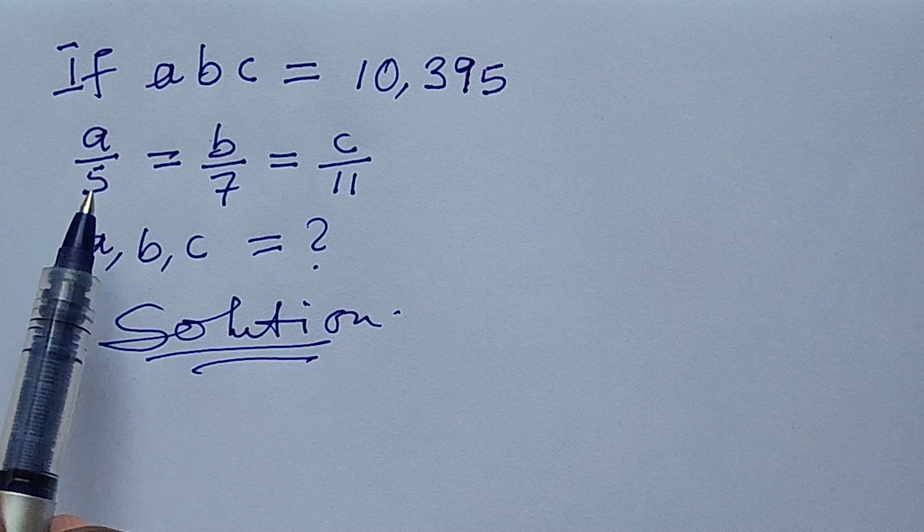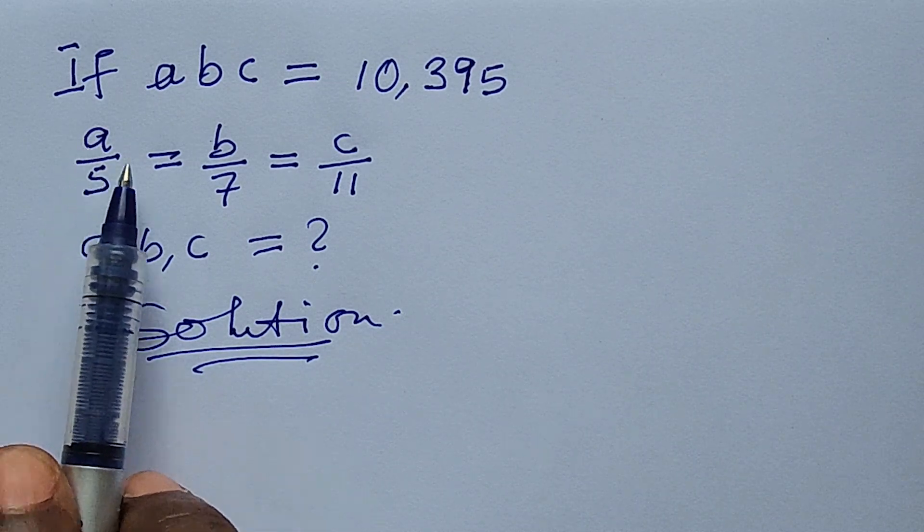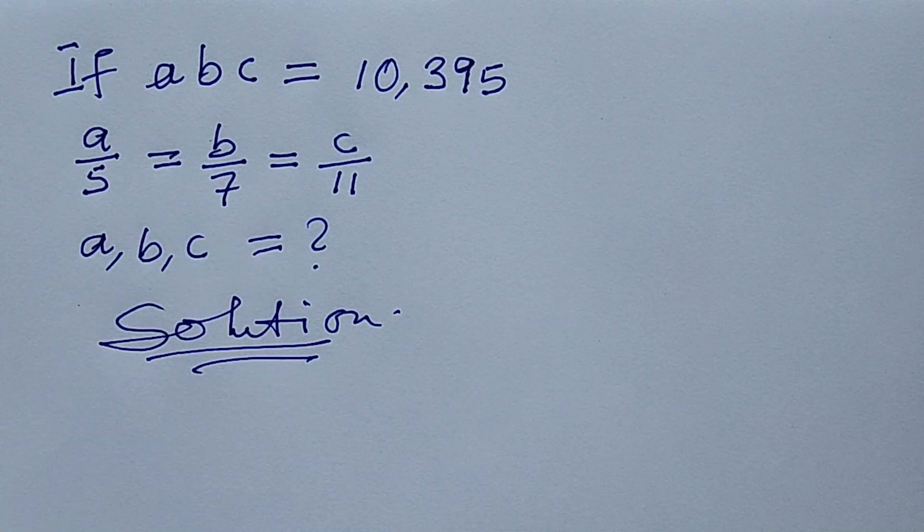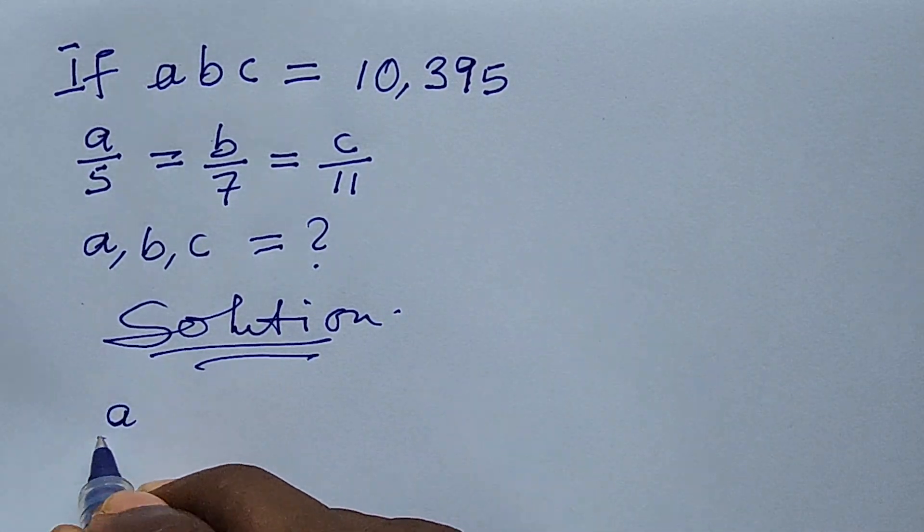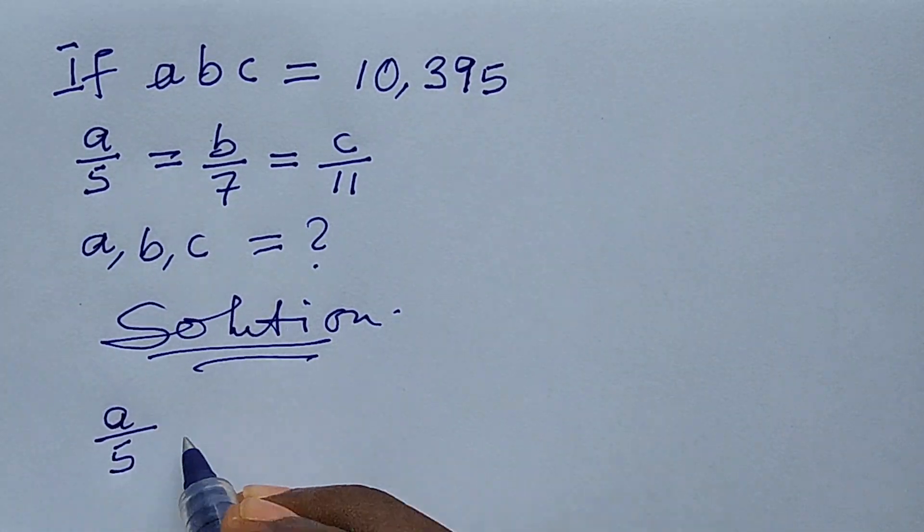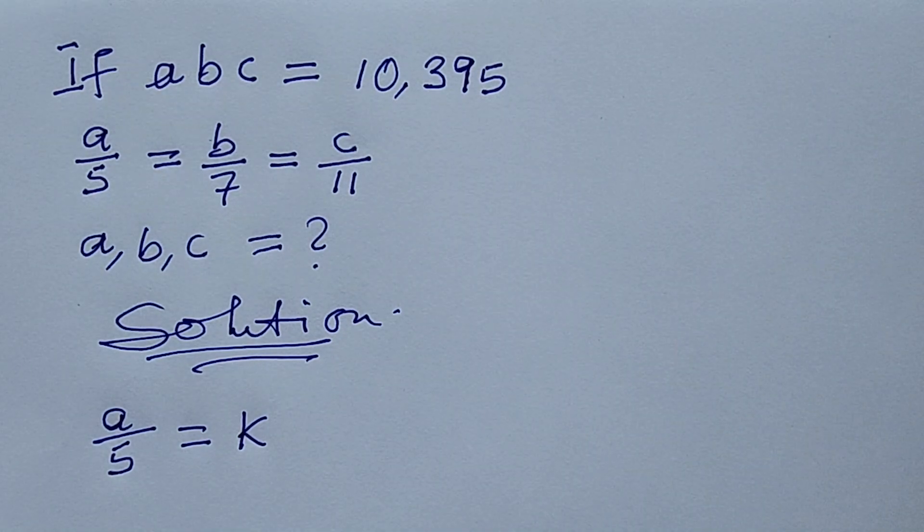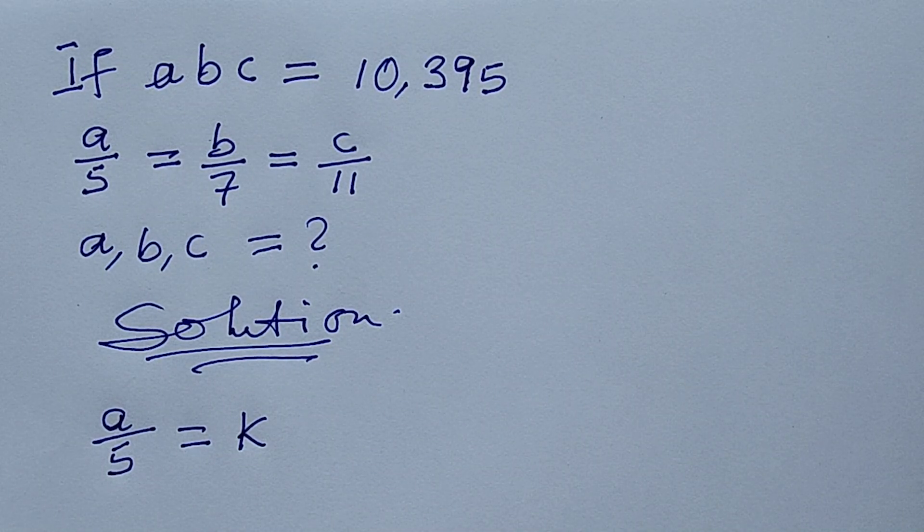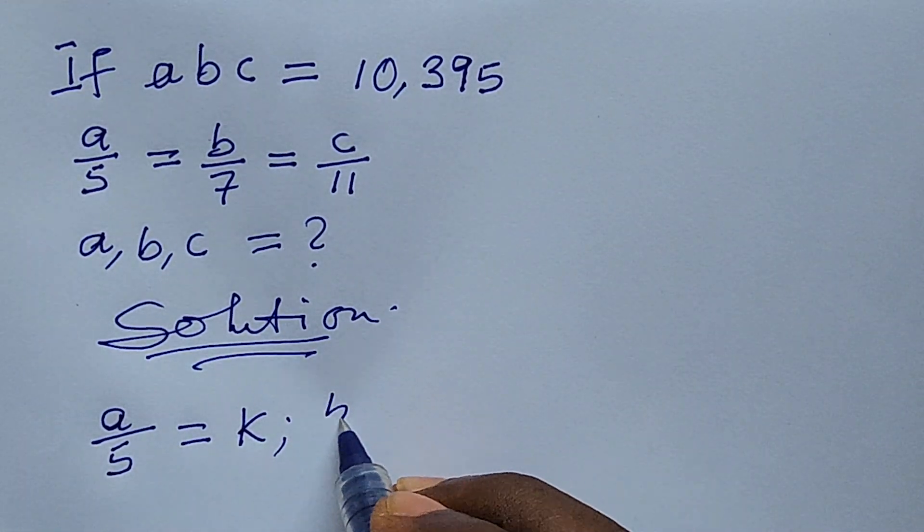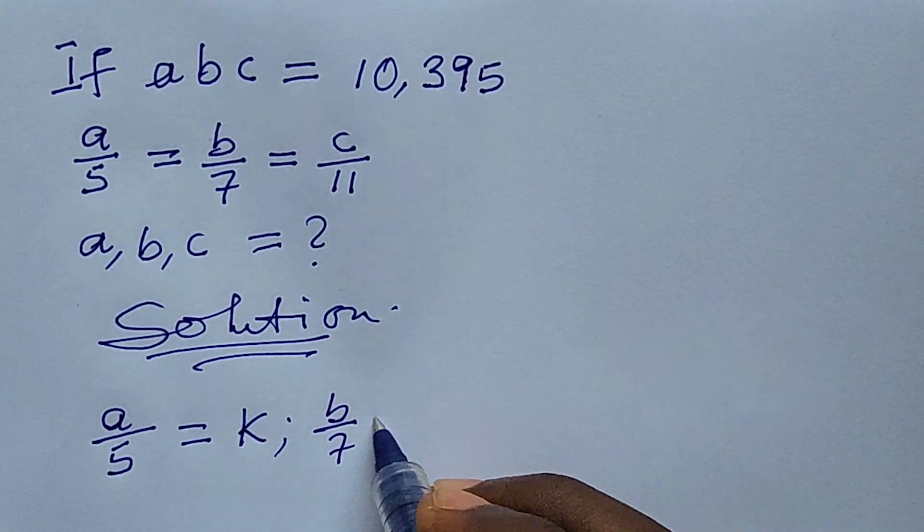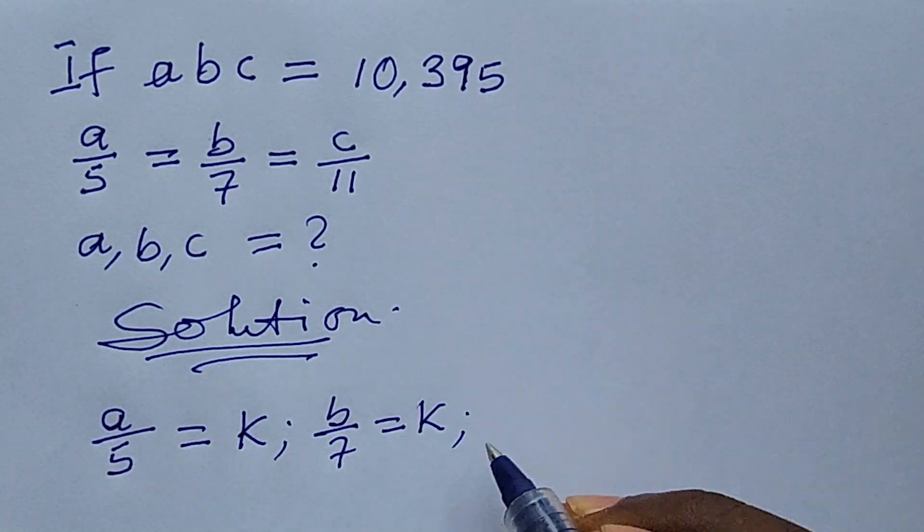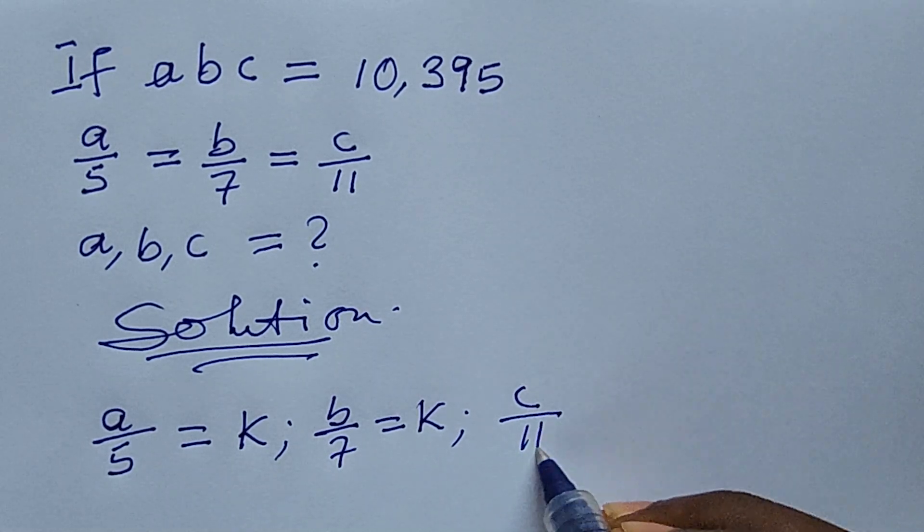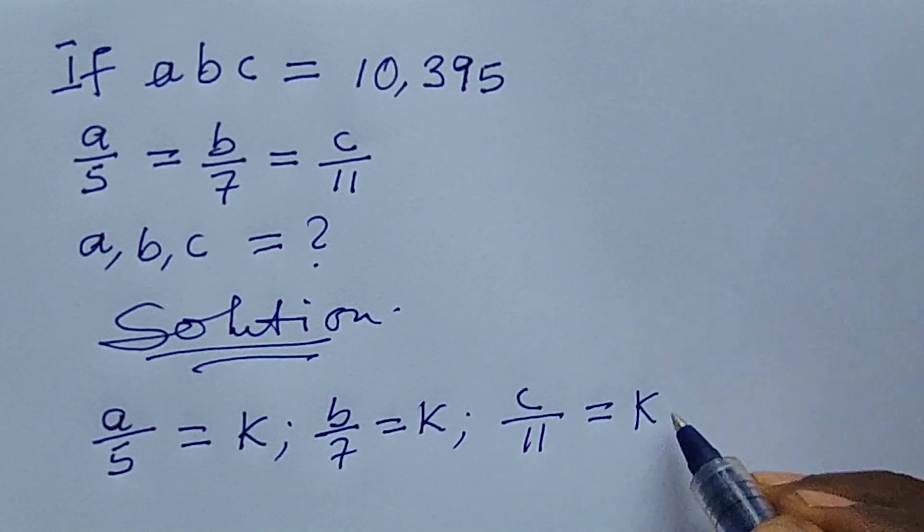We just have to equate either the first quantity or the second to a constant k. From here it means that our a/5 is equal to a constant k. With this it also means that our b/7 will be equal to this same constant k, and also our c/11 is equal to k also.